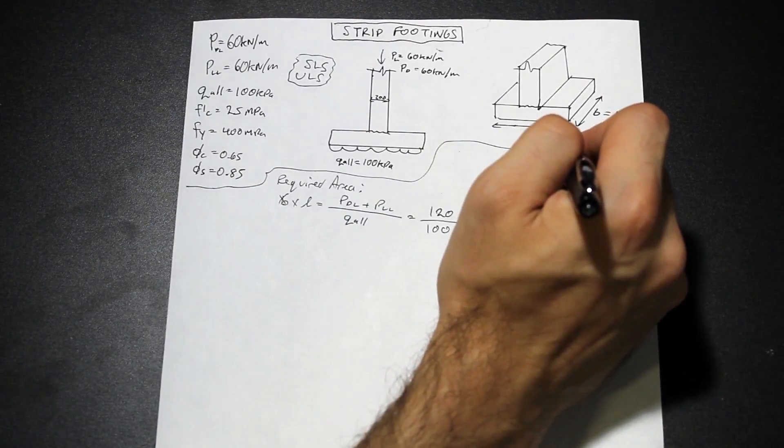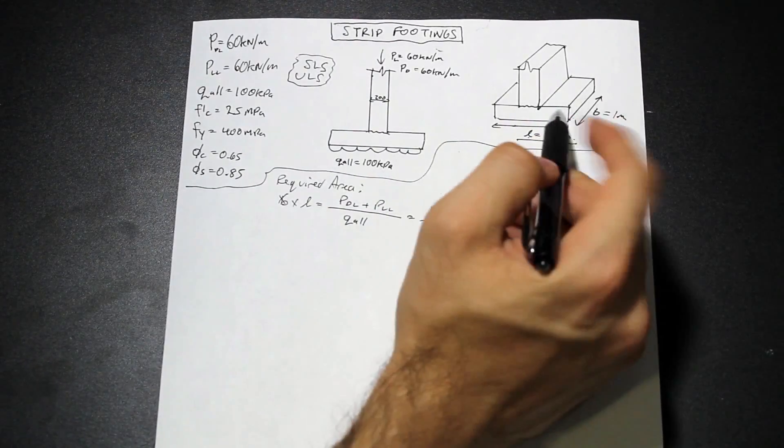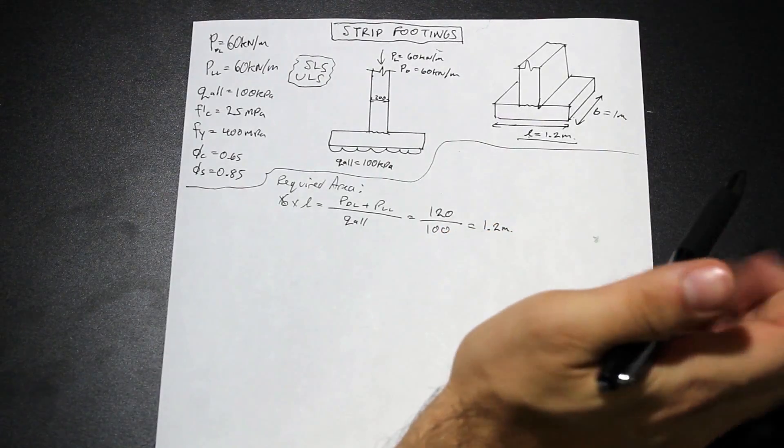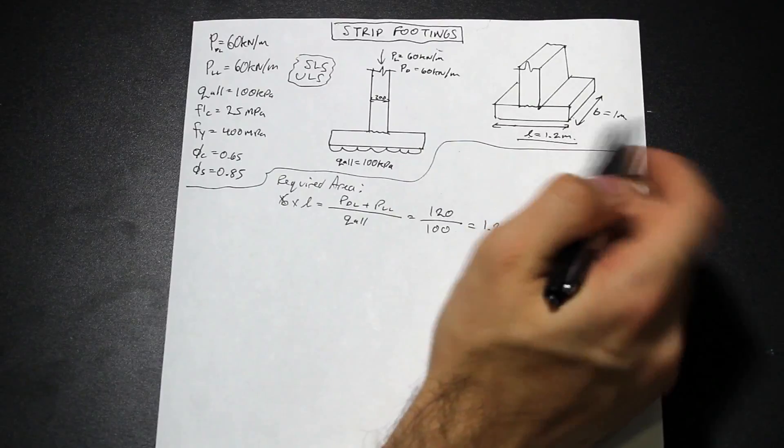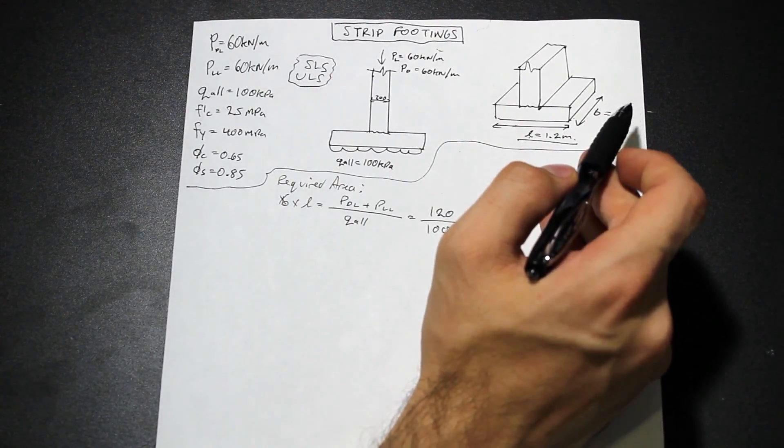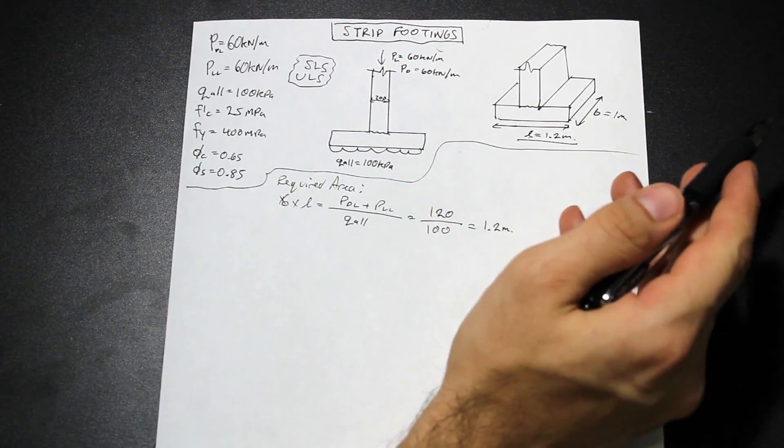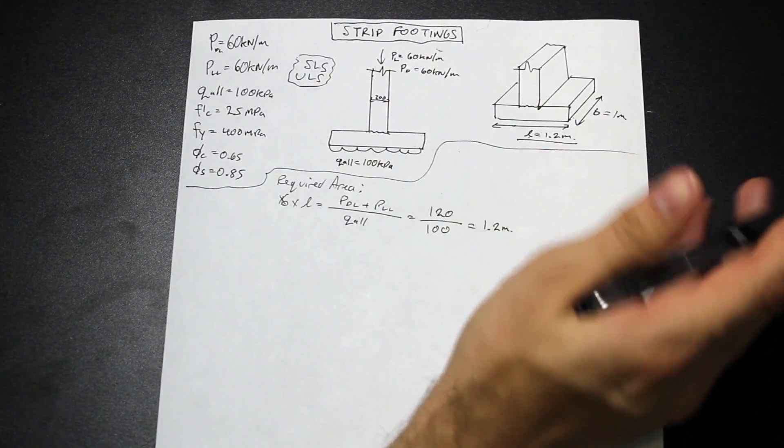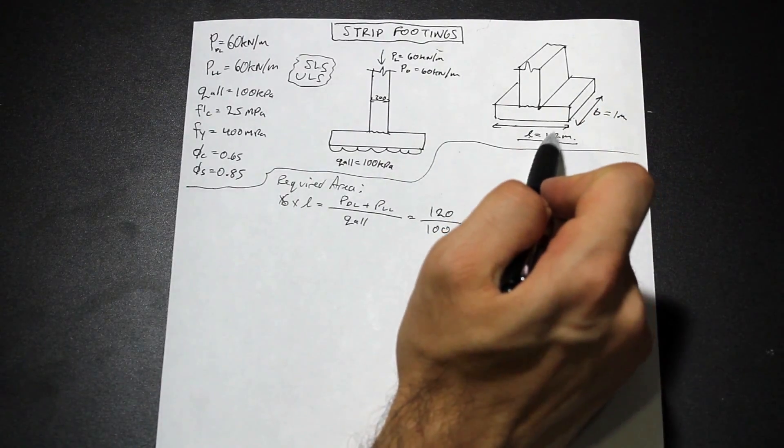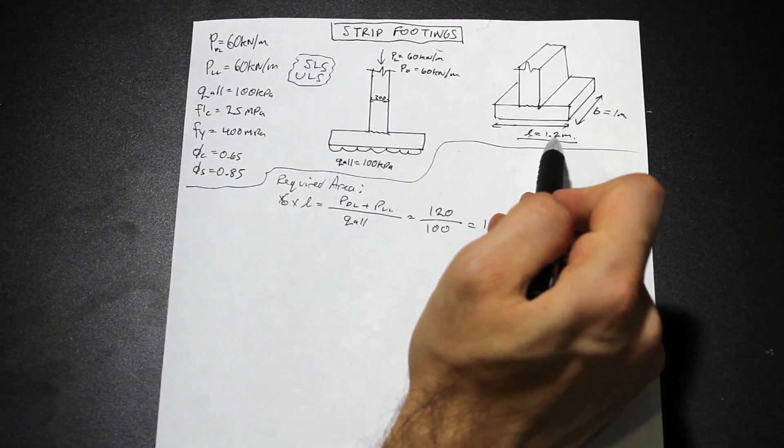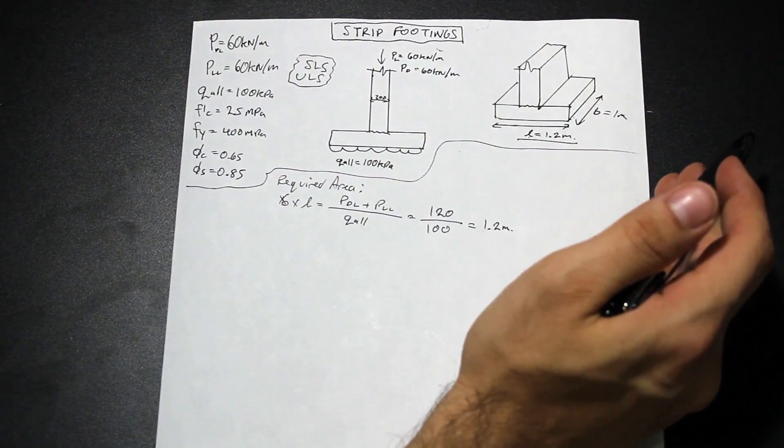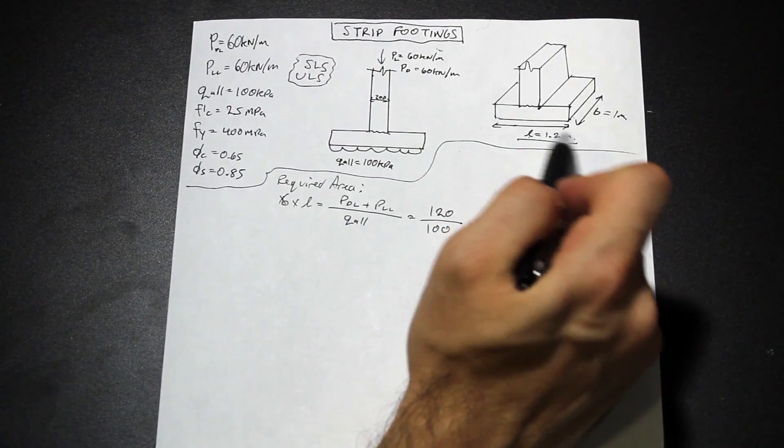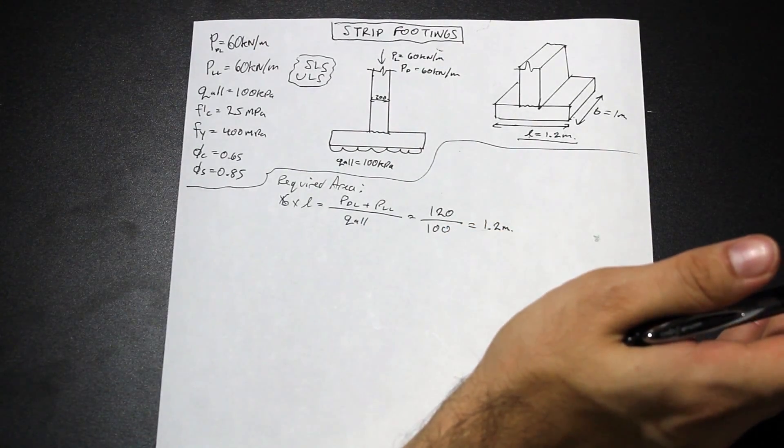So our required dimension is going to be 1.2 meters. So if you get something that isn't a round number, it's important that you just round it off to something very round. Because in real life, when you're pouring this, if you're specifying a length of 1234 millimeters or something like that, the forming guys aren't going to listen to you. So you do need to specify round numbers. So let's say 1.2 meters or 1.3 meters or something like that. Concrete forming is not an exact science. So make sure you keep that in mind when we're designing our footings.